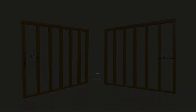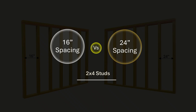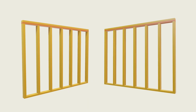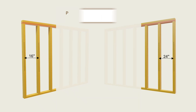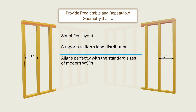In this video, we will explore that decision with clarity and precision. We will examine the code framework that governs when a 16-inch or 24-inch spacing is appropriate. Modern stud spacing did not emerge from theoretical engineering or abstract code development. The familiar 16-inch or 24-inch spacing patterns function as a well-calibrated practical organizing principle, providing predictable, repeatable geometry that simplifies layout, supports uniform load distribution, and aligns perfectly with the standard sizes of modern wood structural panels.